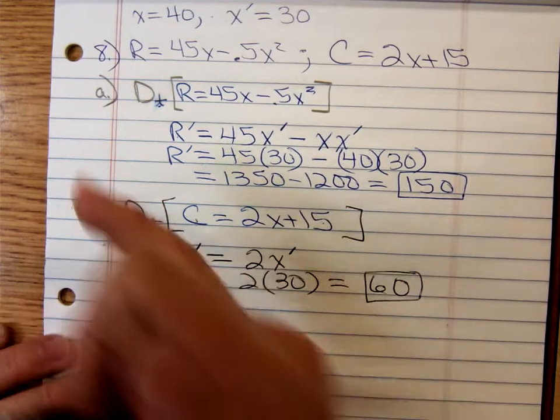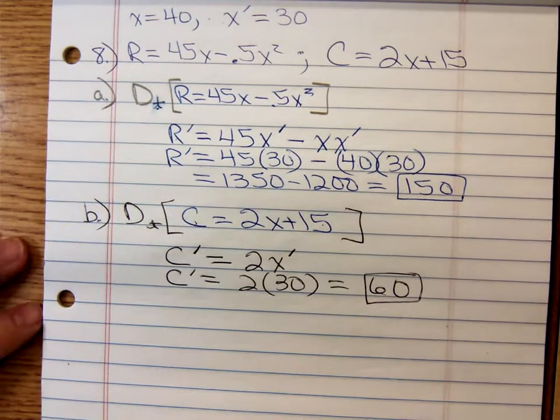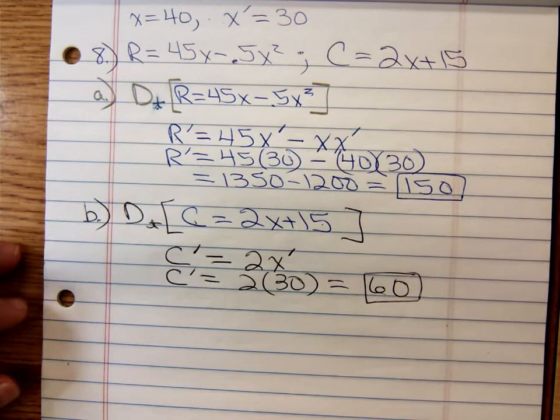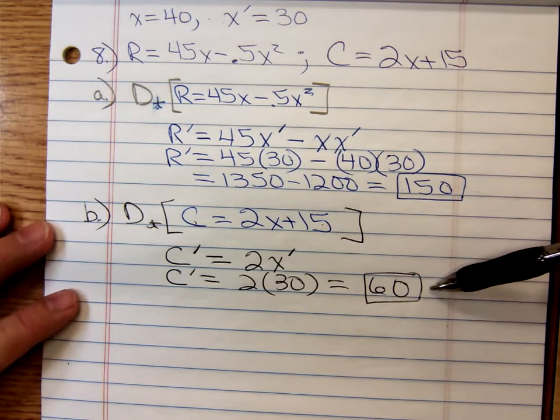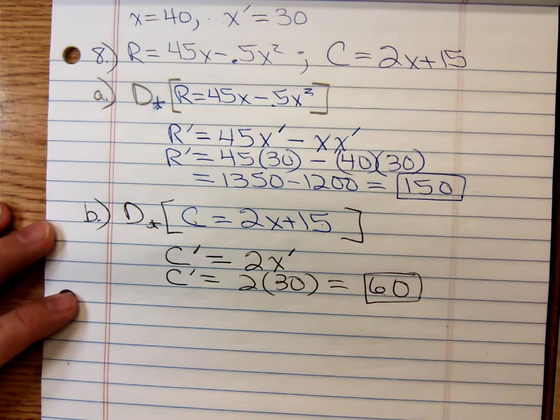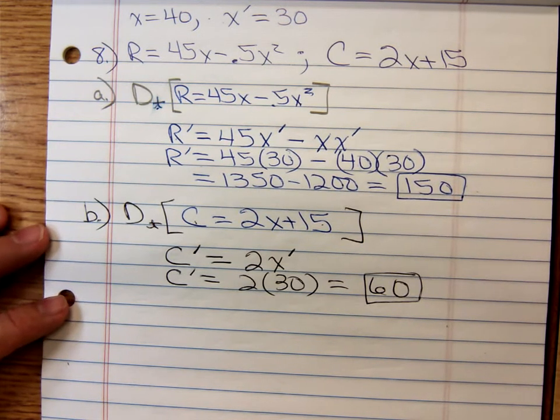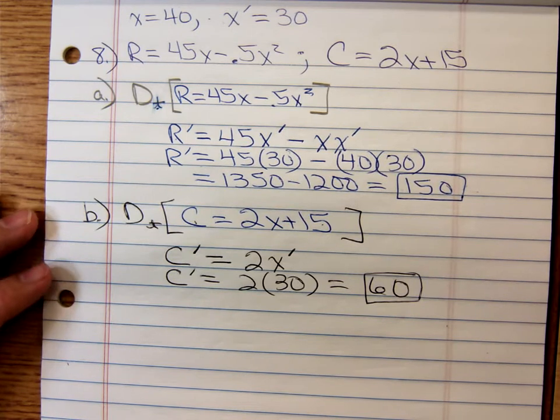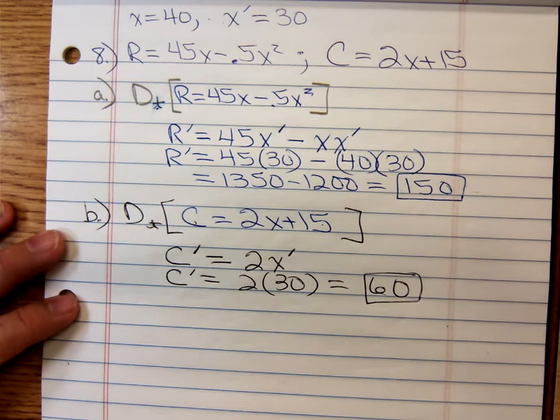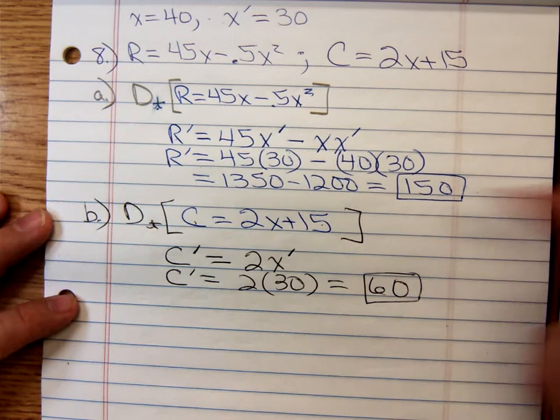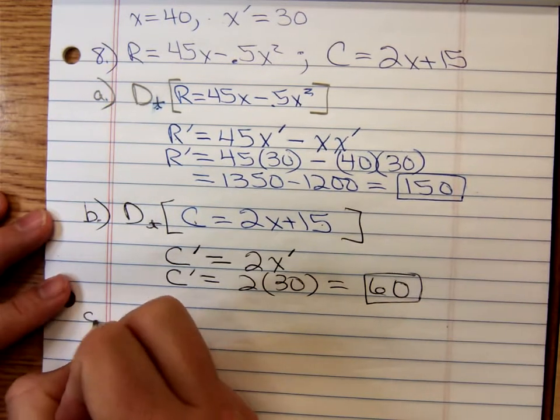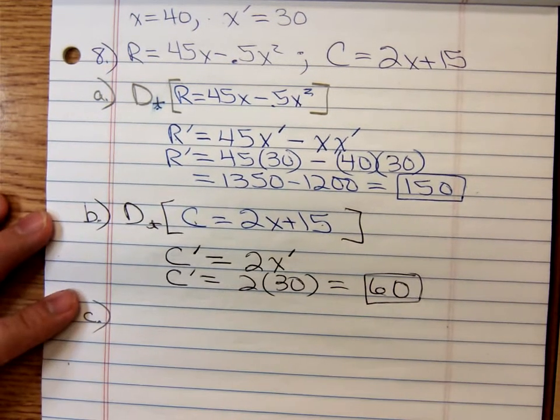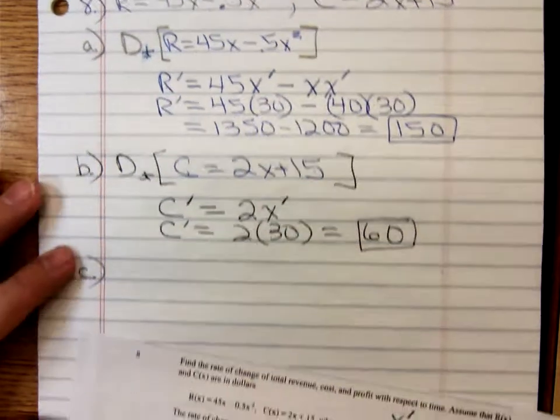So can anyone guess how much the profit function is increasing by? Revenue is increasing by 150, cost is increasing by 60. I bet you could tell me how much you think the profit function is increasing by, without even going through what I'm about to do with part C. But I'll go ahead and do part C anyway. First of all, we need to find our profit function. Remember, profit is equal to revenue minus cost.